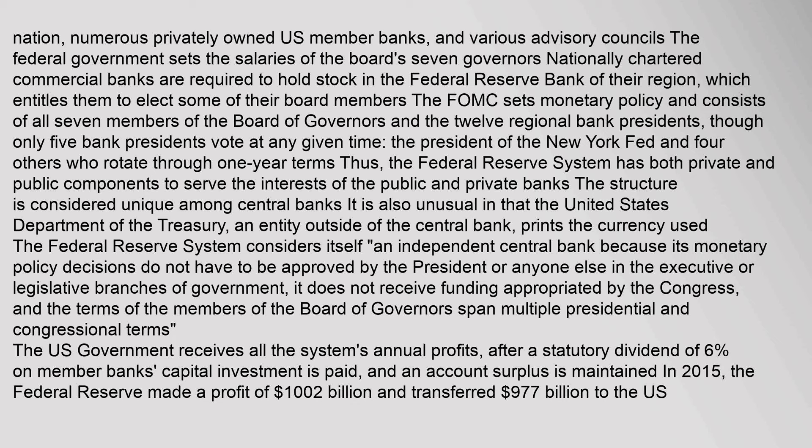The Federal Reserve System has both private and public components to serve the interests of the public and private banks. The structure is considered unique among central banks. It is also unusual in that the United States Department of the Treasury, an entity outside of the central bank, prints the currency used. The Federal Reserve System considers itself an independent central bank because its monetary policy decisions do not have to be approved by the president or anyone else in the executive or legislative branches of government, and the terms of the members of the Board of Governors span multiple presidential and congressional terms. In 2015, the Federal Reserve made a profit of $1.002 billion and transferred $977 billion to the U.S. Treasury.